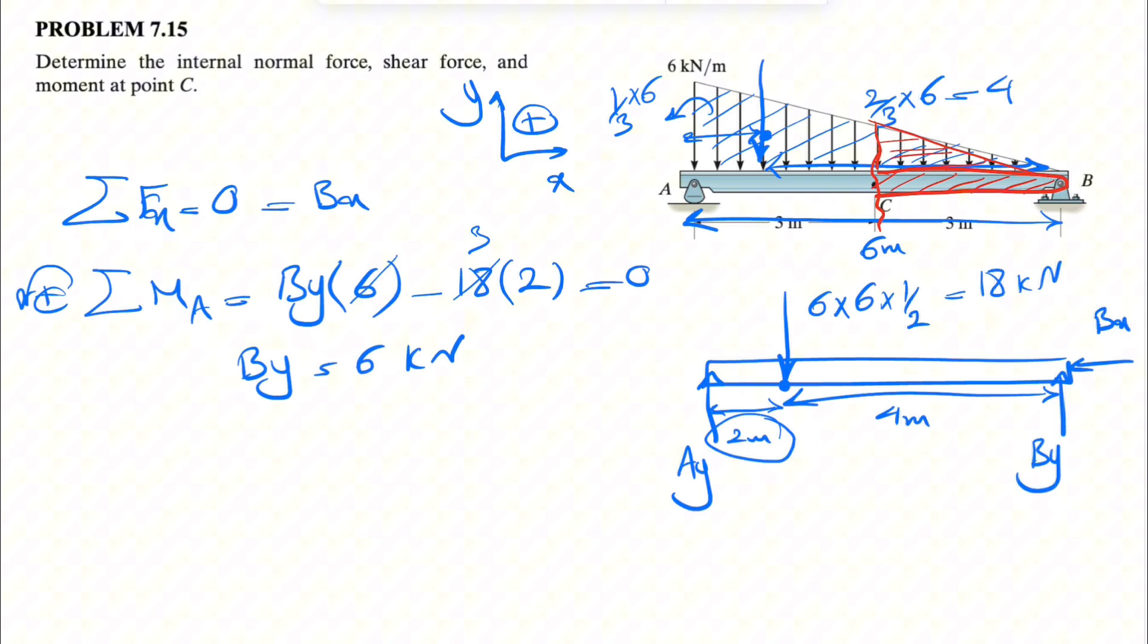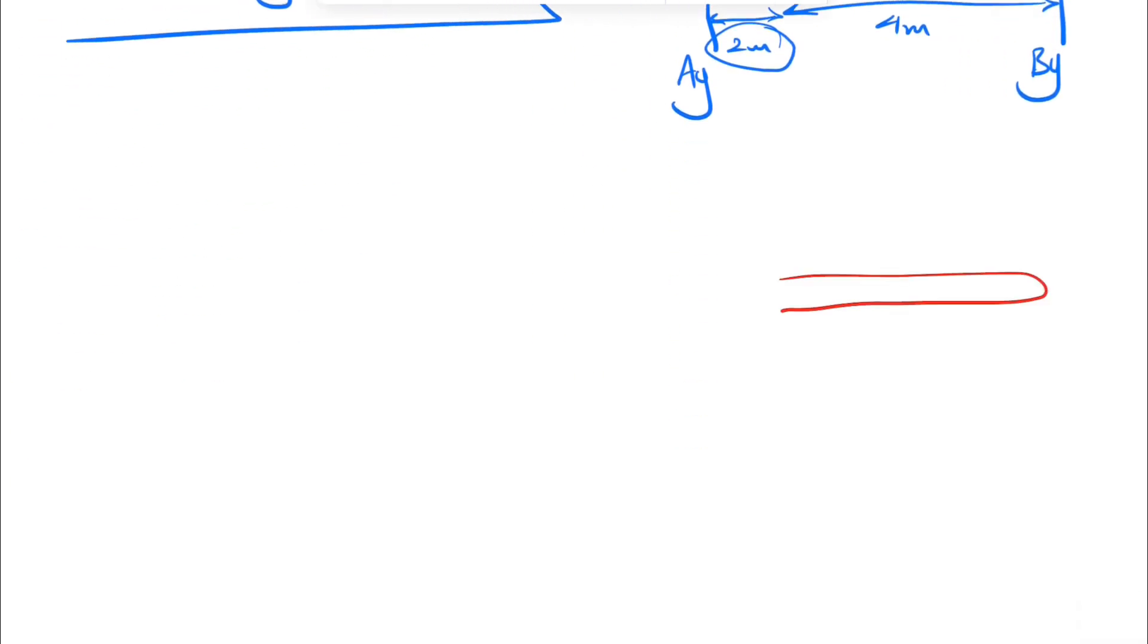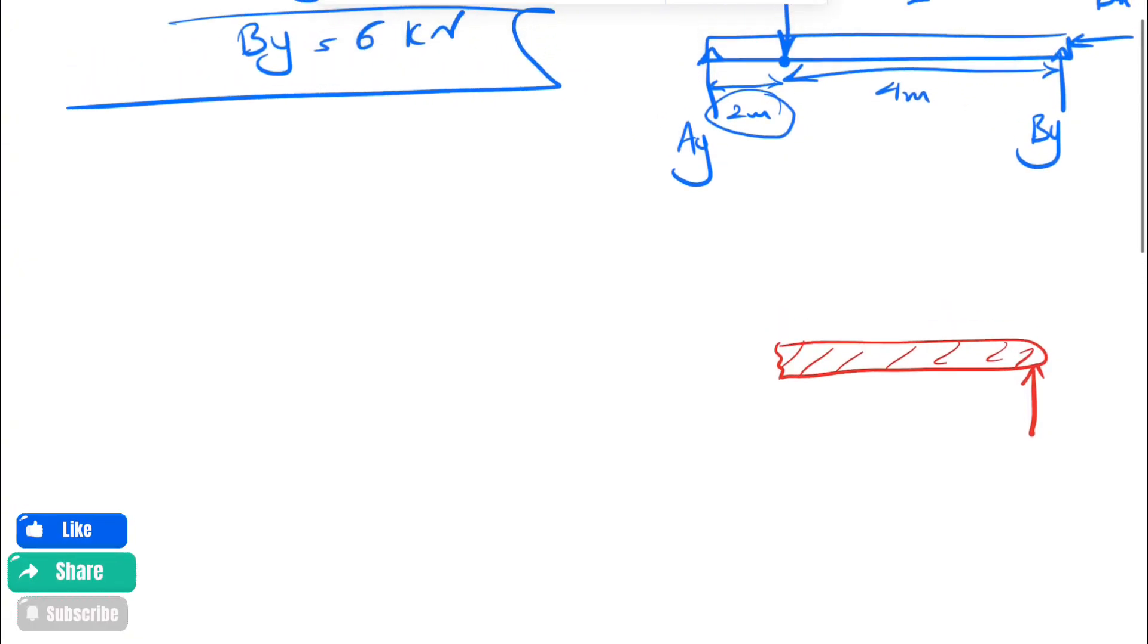We did not get any negative sign, which shows that the direction for By is correct. So now I have all the reactions at B. We can go with the free body diagram of this section of the beam. We have no Bx. We have By, which was six kilonewtons.